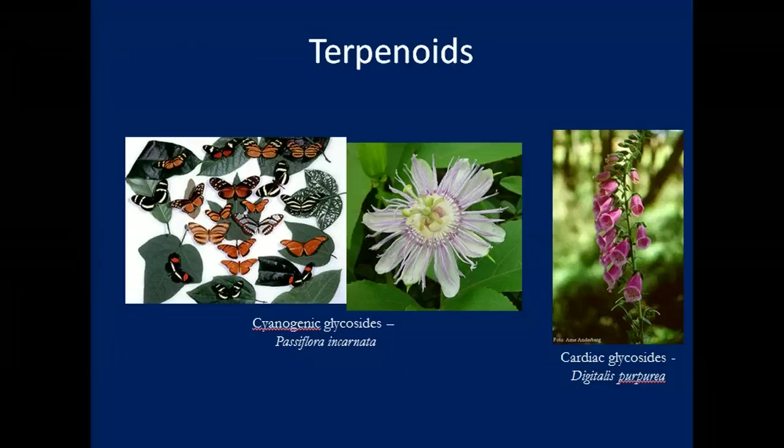Incidentally, the milky sap in milkweeds is also a terpenoid — it is a rubber and also a toxin.